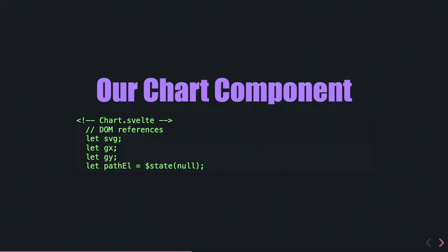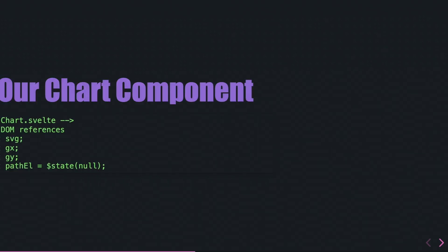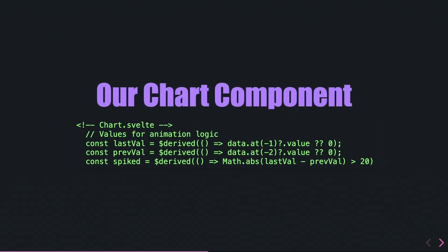The next part is a specific set of variables I use for DOM references: the SVG variable, two variables related to axes, and the path element used as state — you'll see why later. For the chart component, I also have a last value and previous value, basically to create the line itself. And I have the spiked value: if the differentiation between two specific points is too large, there will be a pulsing effect. You'll see in a few slides how that looks from the code and CSS animation perspective.